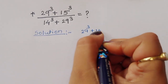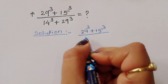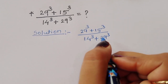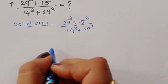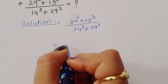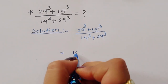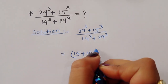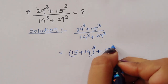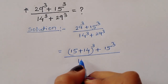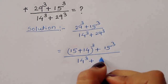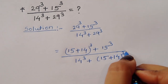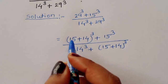We have (29³ + 15³) divided by (14³ + 29³). We can rewrite 29 as 15 + 14, since 15 + 14 = 29. So we get (15 + 14)³ + 15³ divided by 14³ + (15 + 14)³.